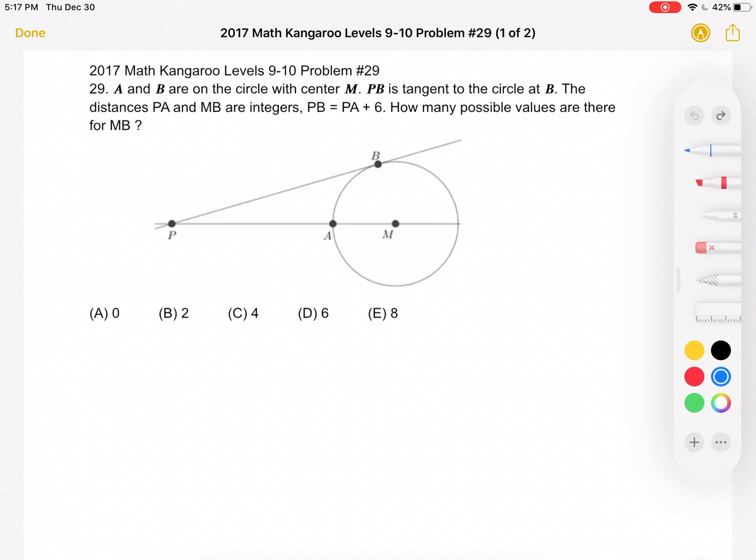This is the 2017 Math Kangaroo levels 9-10 problem number 29. A and B are on the circle with center M. PB is tangent to the circle at B.